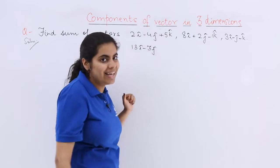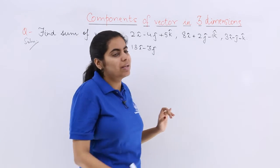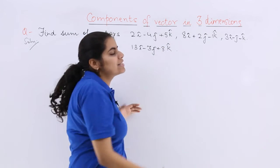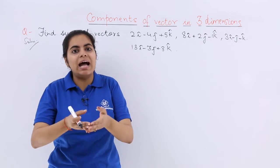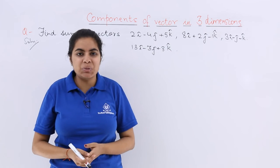Last but not the least, here it is k cap. So 5 minus 1 is 4. 4 minus 1 is 3. So plus 3k cap. That is the answer. As simple as that. So if you know that you have to add the vectors, add the like components together and then the other like components and so on.